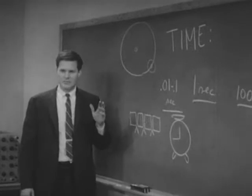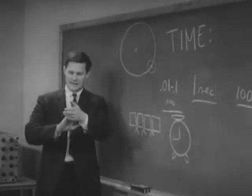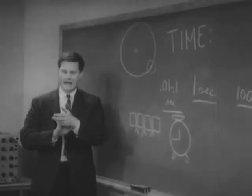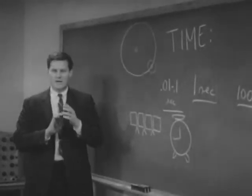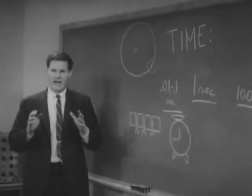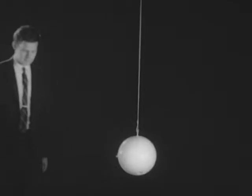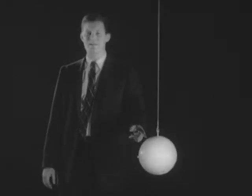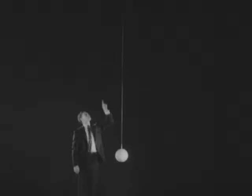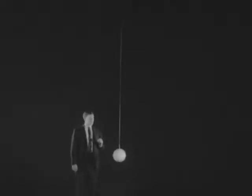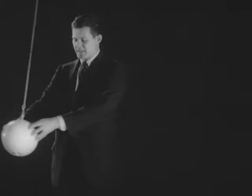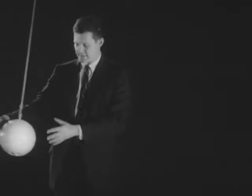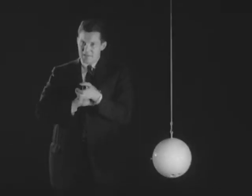One way of subdividing time that's crude but convenient is to use one's pulse. There's an interesting story about Galileo, who was watching a lamp swinging in a church and timed it using his pulse. Here's a bowling ball suspended from the ceiling of the studio, about 25 feet high. Imagine it's a lamp such as Galileo might have observed. He found that whether it was swinging in a big arc or a relatively small arc, it took the same time — as he found by timing it with his pulse.